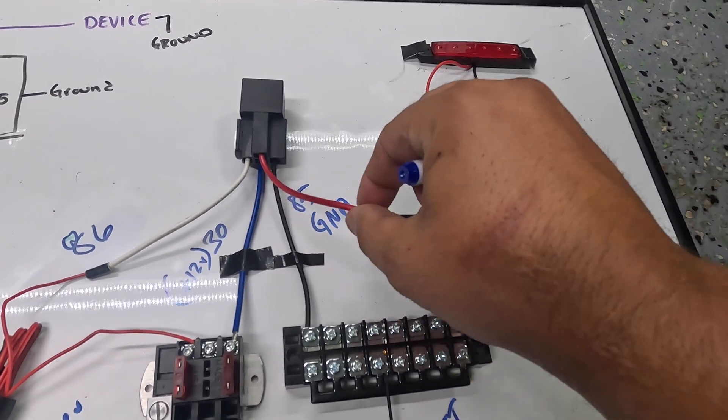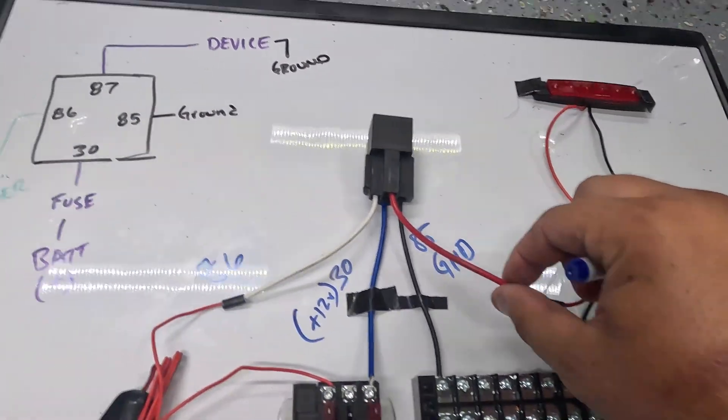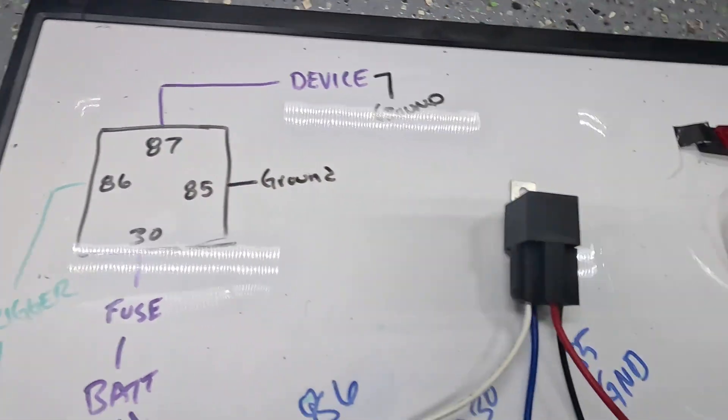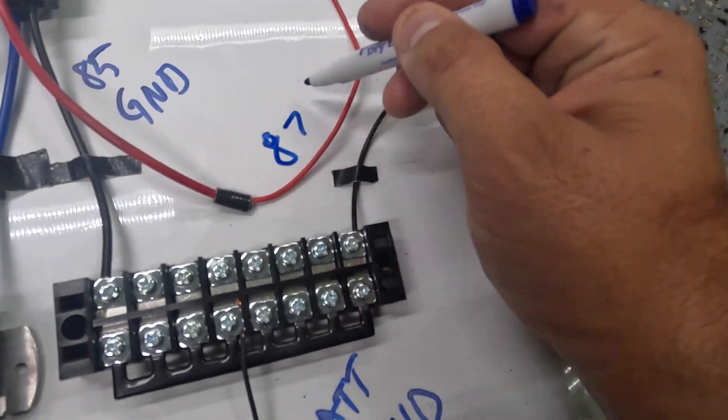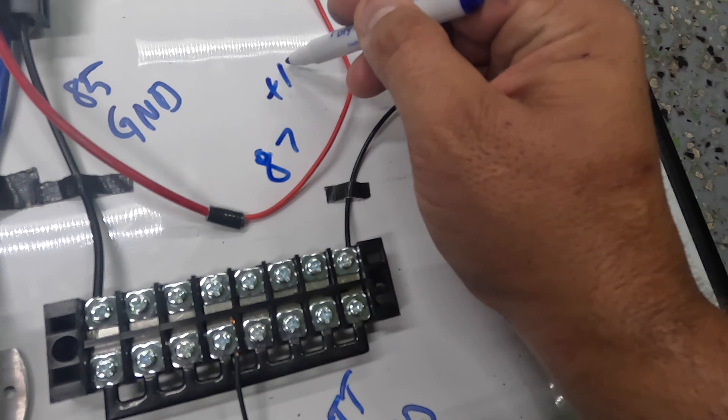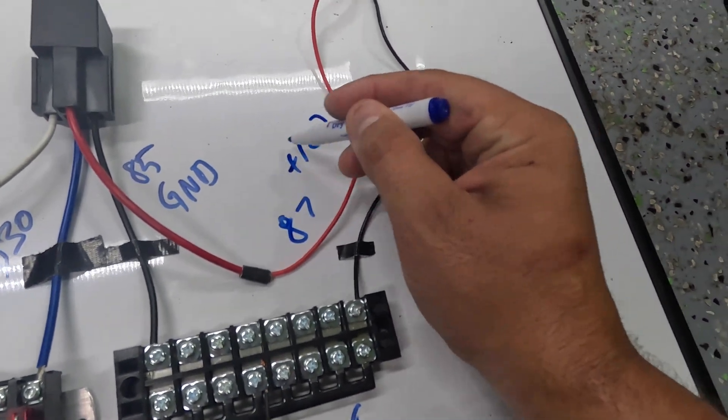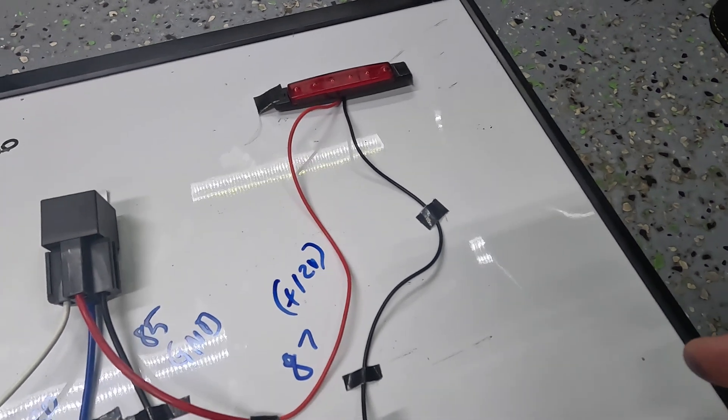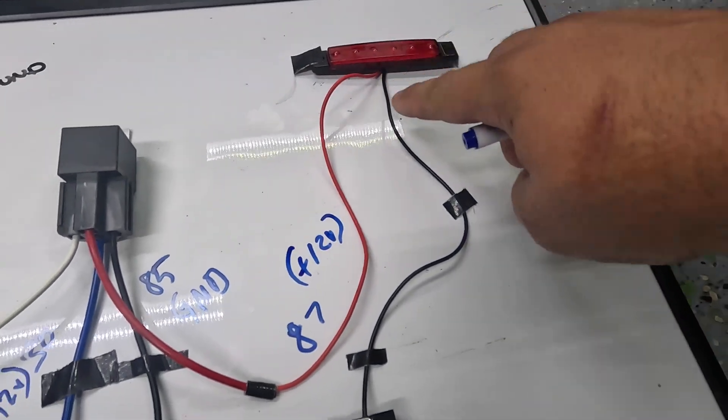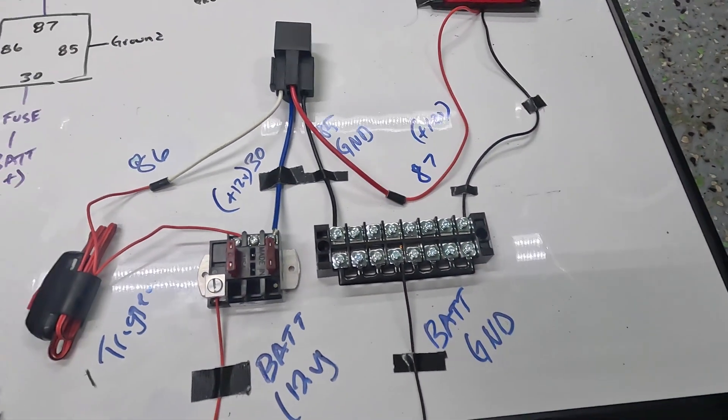So then this red wire, which I can't really write on, this is going to be your pin 87, which is going to be your output. So we got 87 and this is going to be plus 12 volts, which then obviously goes as your input to your driven device. There's obviously a ground which is going to go back to your battery here.